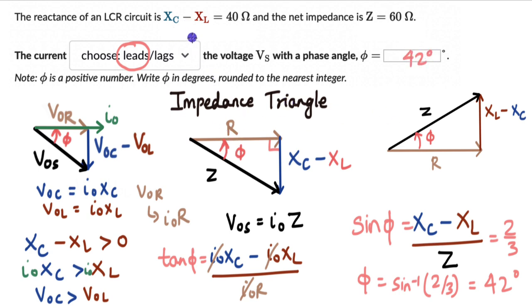So whenever the capacitive reactance is more than the inductive reactance in a circuit, the current will always lead the voltage. And when the inductive reactance is more than the capacitive reactance, the current will lag the net supply voltage. You can try more questions from this exercise in this lesson, and if you are watching on YouTube, the exercise link is in the description. Thank you.